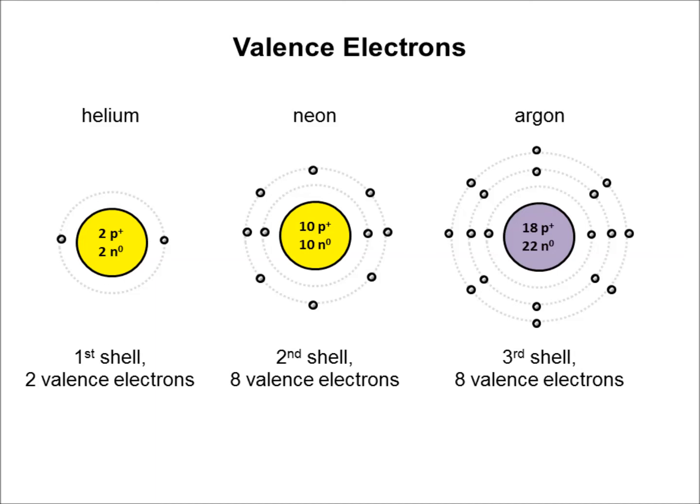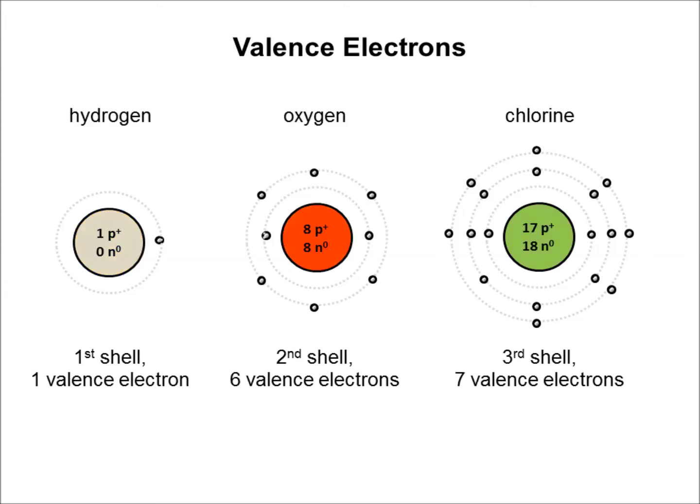By contrast, let's go back and look at the three elements we presented before. Hydrogen has one valence electron. Its valence shell needs one more to be closed. Oxygen has six valence electrons. It needs two more to close that shell out. Chlorine has seven valence electrons. It's one electron away from a closed shell.